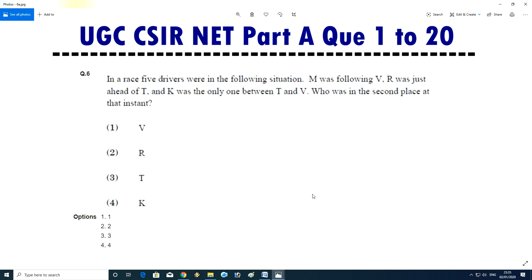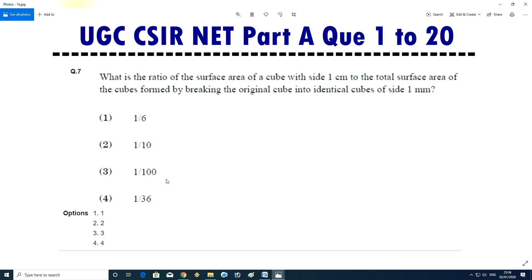Question number six: in a race five drivers were in the following situation. M was following V, R was just ahead of T, and K was only one between T and V. Who was in second place at that instant? Answer is third, T.